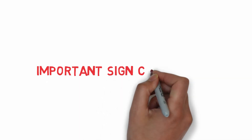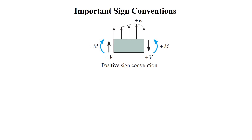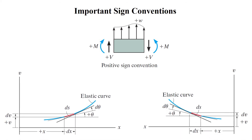The proper sign conventions used throughout this course are as follows: upward distributed loads w on the beam are positive; shear load V causing clockwise rotation of the beam segment is positive; and the internal moment causing compression in the top fibers of the segment is positive. In calculation of deflection and slope, positive deflection is upward. Positive slope angle θ is measured counterclockwise from the x-axis when x is positive to the right, and clockwise from the x-axis when x is positive to the left.